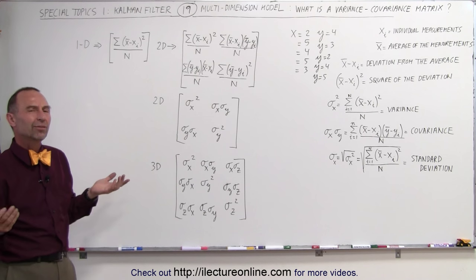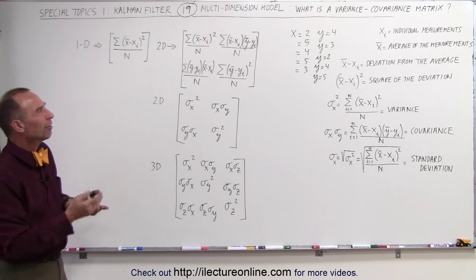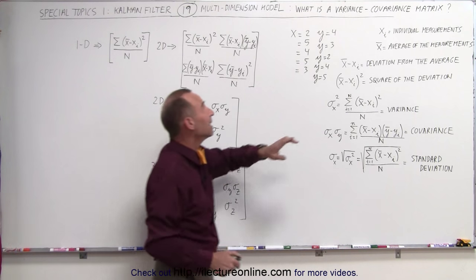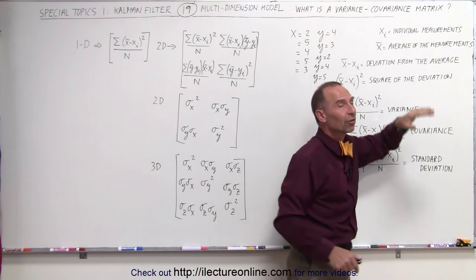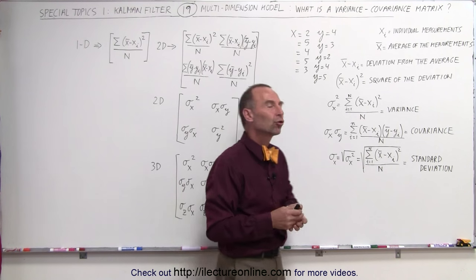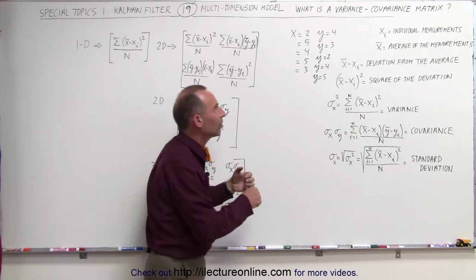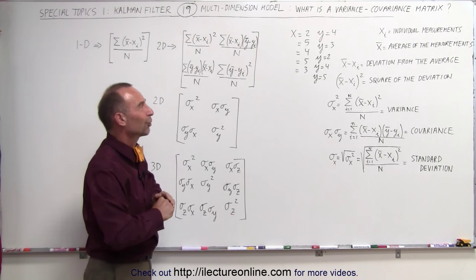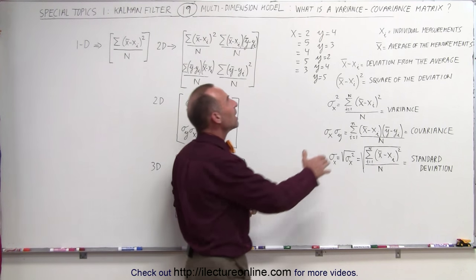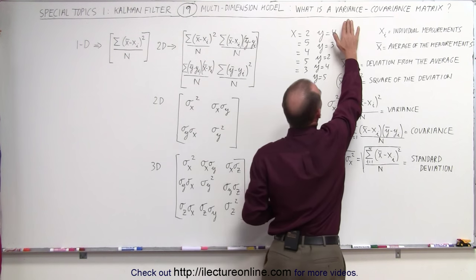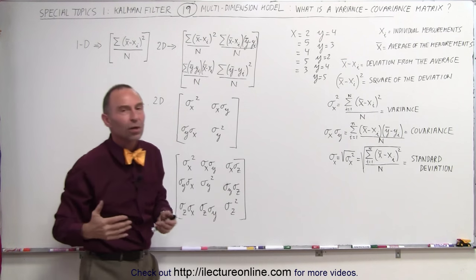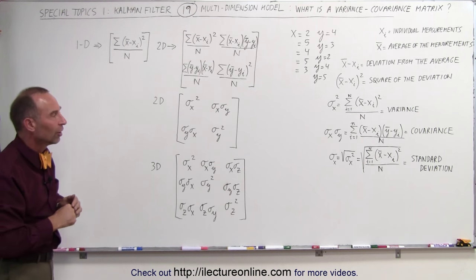You may ask why it's called a variance-covariance matrix. The true name is indeed a variance and covariance matrix, but we usually call it a covariance matrix for short. So when you hear the word covariance matrix, what they're really saying is variance-covariance matrix — we simply shorten it to covariance matrix.